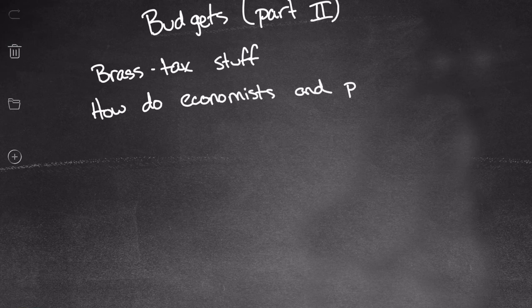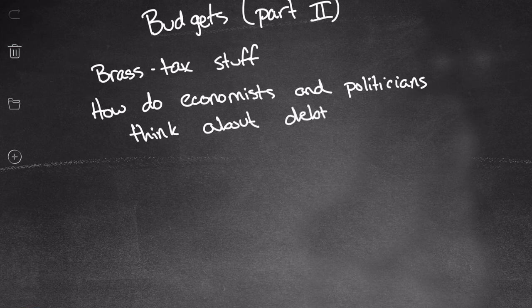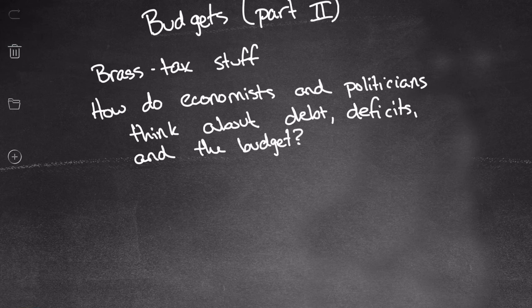Last time we talked about some of the more theoretical aspects of budgets, so today we're getting into budgets part two. The idea is to get into the brass tacks stuff — we're going to try to answer the question: how do economists and politicians think about debt, deficits, and the budget? This will also include some aspects of how the media thinks about it as well.